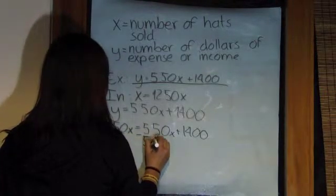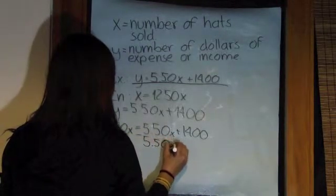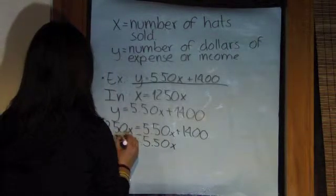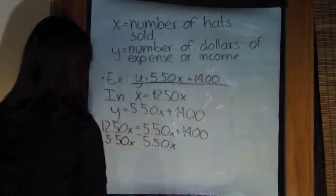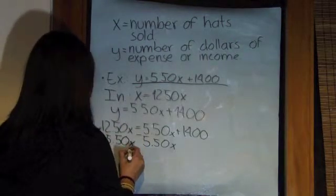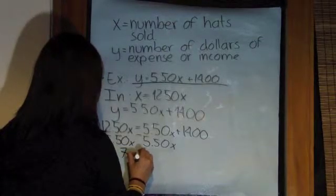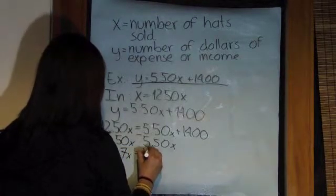We need to subtract 5.5X from each side. So 12.5X minus 5.5X is 7X equals 1,400.